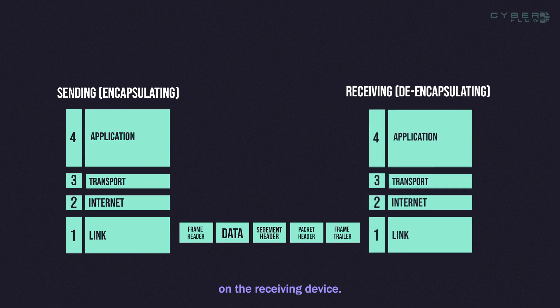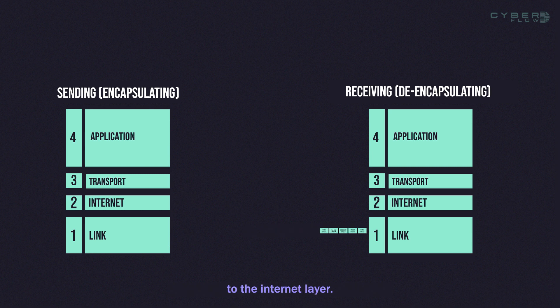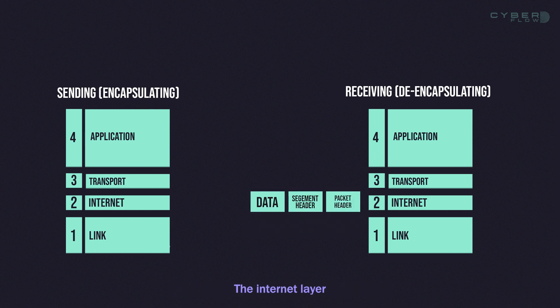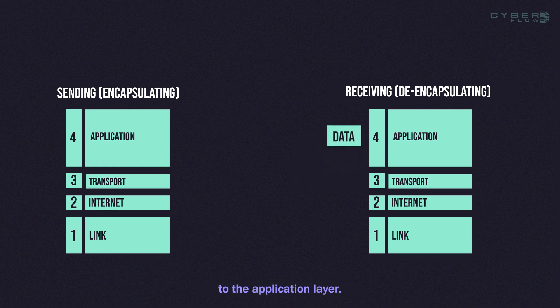On the receiving device, the packets are received by the link layer, which removes the MAC addresses and sends the packets to the internet layer. The internet layer then examines the destination IP address and sends the packets to the transport layer. The transport layer then reassembles the packets and sends the data to the application layer.